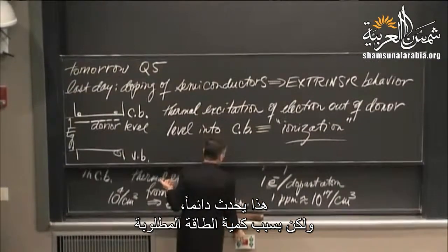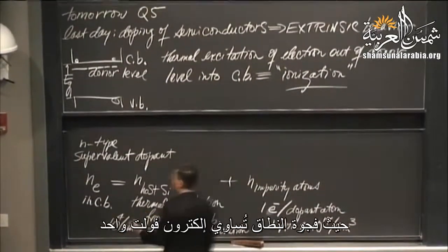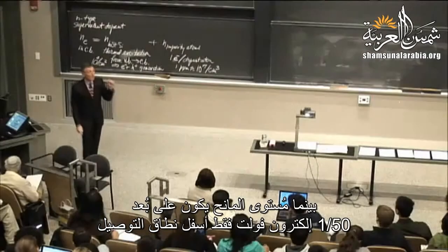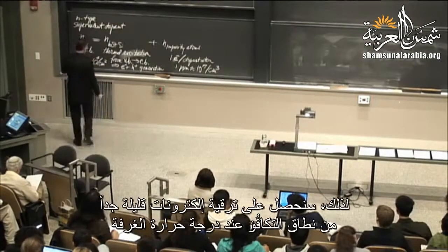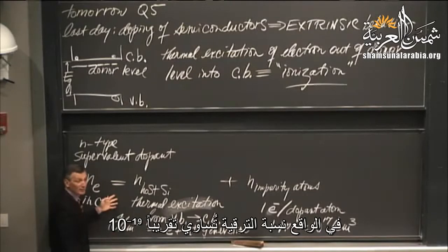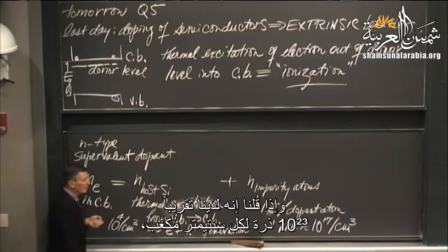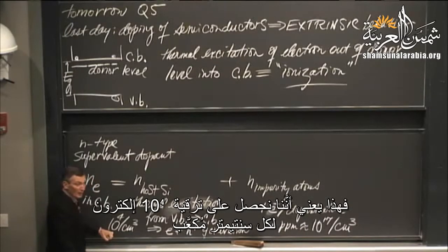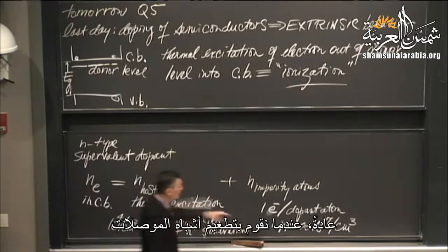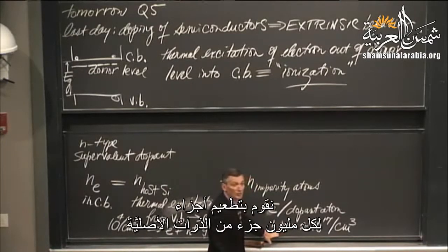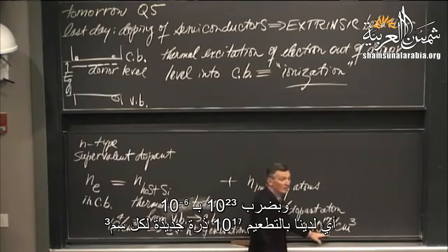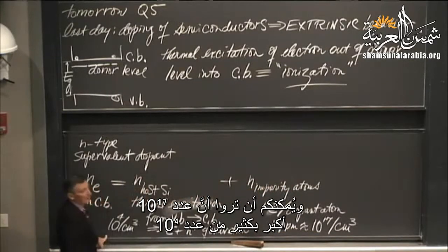That's always operative, but owing to the energies involved, the band gap is on the order of one electron volt, whereas the donor level sits only about 1/50th of an electron volt below the conduction band. So we get very little promotion at room temperature — it's something like 10 to the minus 19 as the fraction of promotion. If you say roughly 10 to the 23rd per cubic centimeter, that means you've got about 10 to the fourth electrons per cubic centimeter due to thermal excitation from the valence band to the conduction band. Normally, when you dope a semiconductor, you dope it around parts per million level, which is 10 to the minus 6. Taking 10 to the minus 6 times 10 to the 23rd, you get about 10 to the 17.